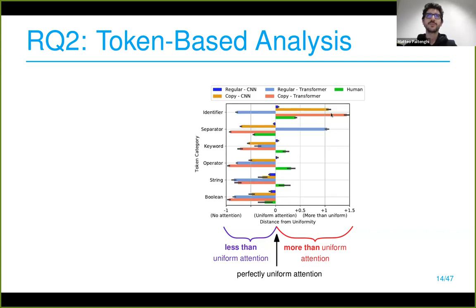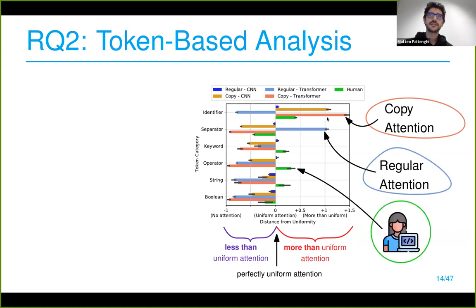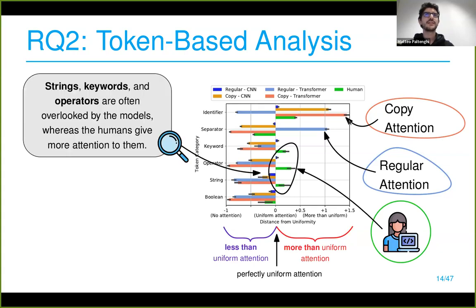These are the results for five different groups. Humans are in green, the copy attention model is in orange, and regular attention is also shown. What we can see is that token categories like keywords, operators, and strings are deemed very important by humans, but are somewhat overlooked by the models — all types of model attention give them less than even uniform attention.